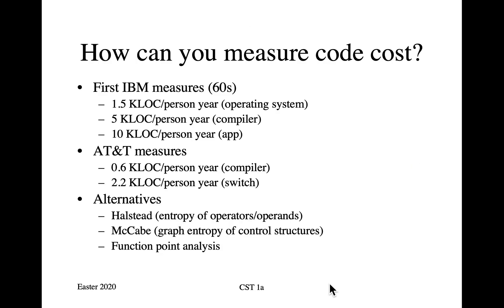So how do you measure the cost of software? In the early 1960s, early adopters such as IBM and AT&T started to run the numbers. They found that the average productivity of programmers was a function of what type of software you were producing. With complicated things like operating systems, you would be lucky to get 1,500 lines of code per person per year.